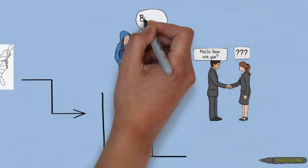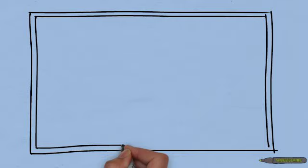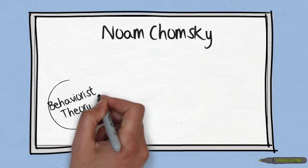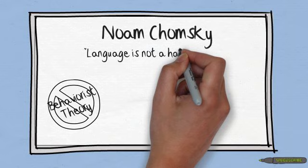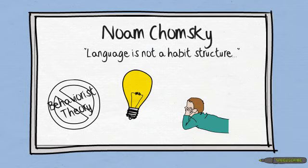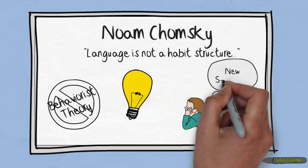In the late 1960s, linguistic theory began to take a different direction. Part of the reason for this is MIT linguist Noam Chomsky's rejection of the behaviorist theory of language learning. Language is not a habit structure, Chomsky said. Ordinary linguistic behavior characteristically involves innovation, formation of new sentences and patterns in accordance with rules of great abstractness and intricacy. Chomsky argued that much of human language use is not imitated behavior. Instead, it's created from underlying knowledge of abstract rules.